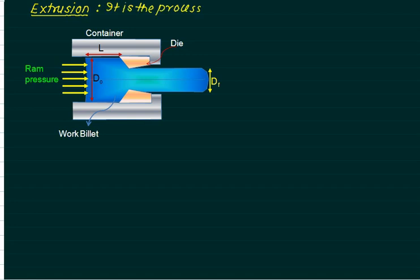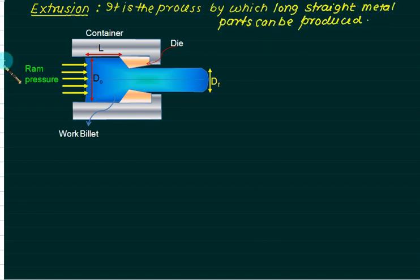Extrusion is a process by which long straight metal parts can be produced. The only problem with extrusion is that it will produce only uniform cross-sections. It can be solid or it can be hollow, depending on the die we are using.